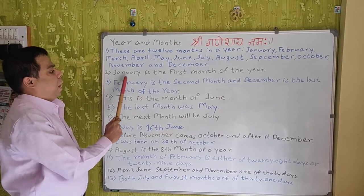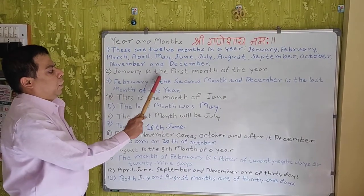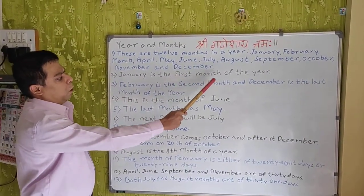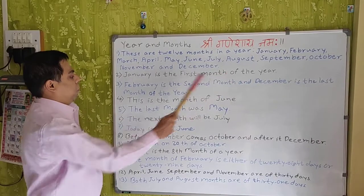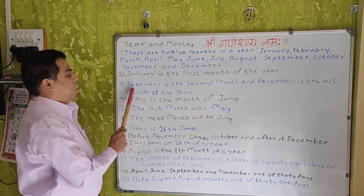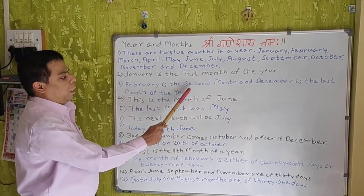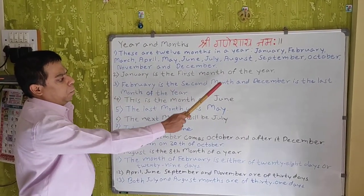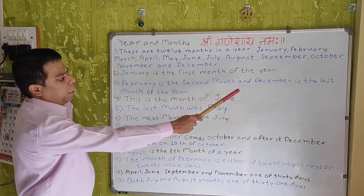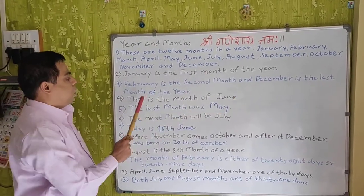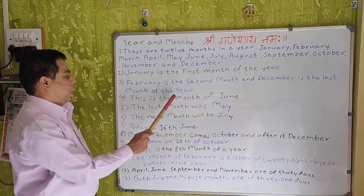January is the first month of the year. February is the second month and December is the last month of the year.